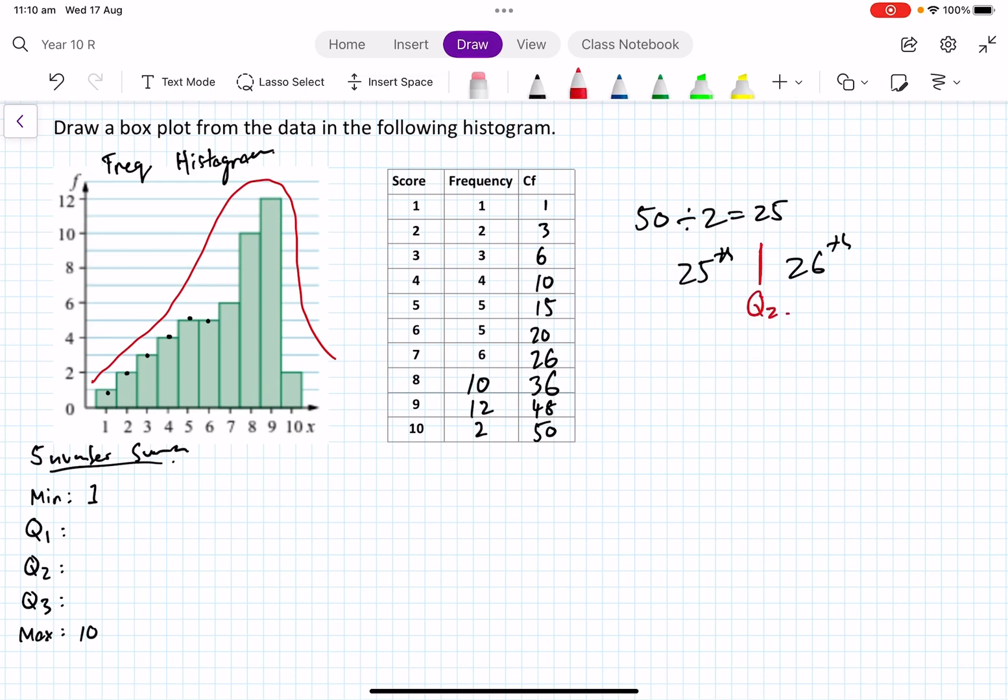So we've got the 25th and 26th score. This is where my median is going to be, Q2. I need to find my 25th and 26th. Well look, if I see here, 20th.